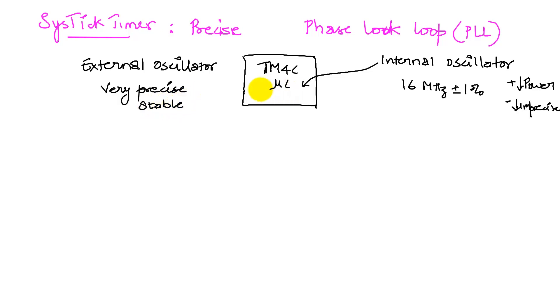This external oscillator, depending upon what has been chosen for your board, the one that has already been soldered is also a 16 megahertz crystal. But you can choose to put a different crystal if you want. Now, what we have is the phase lock loop can take advantage of an external oscillator.